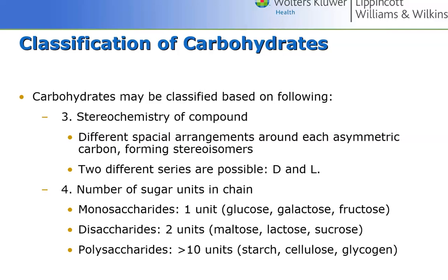Why do we need those enzymes? Because we can't absorb disaccharides in the intestinal tract — we can only absorb monosaccharides. Those monosaccharides are what need to get absorbed into the bloodstream so we can utilize them for energy or for production of more complex carbohydrates. There are also oligosaccharides, which means just a few units, but we don't talk about those much. Then we have polysaccharides, which have more than ten monomers or monosaccharides put together.